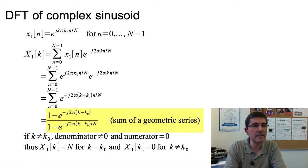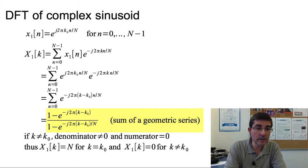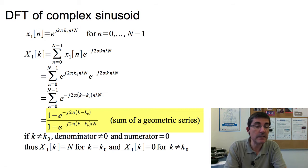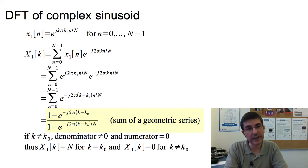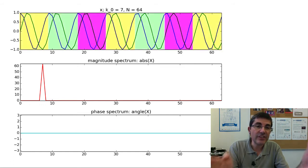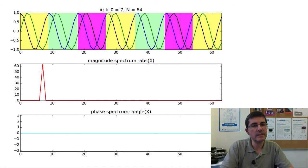By inspecting this closed-form equation, we can see that when k is not equal to k sub 0, the denominator is not zero, but when k equals k sub 0, the denominator is 0. Therefore, the output X of k is equal to capital N when k is equal to k sub 0, and is equal to 0 for the rest. So the DFT of a complex sinusoid has a single non-zero value at k equal to k sub 0. In this plot, with k equals 7 and capital N equals 64, there are seven periods in these 64 samples — we see the cosine and the sine.